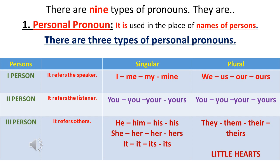The second form — me, us, you, him, her, it, them — these are the objective case pronouns, used in the object place in the predicate part. The third form is the possessive adjective, which can be used with nouns. The last form is the possessive pronoun.